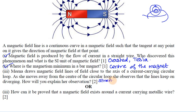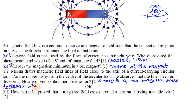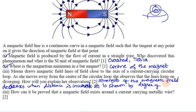The strength of the magnetic field decreases when distance is increased. This is shown by the degree of closeness of the field lines — as the field lines diverge, the magnetic field becomes weaker.